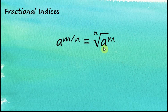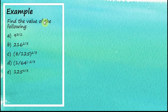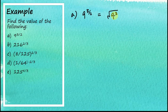Let's look at this example: find the values of the following. 9 to the power of 3 over 2. This is equal to the square root of 9 to the power of 3. The square root of 9 is 3, so this becomes 3 to the power of 3, which is equal to 27.